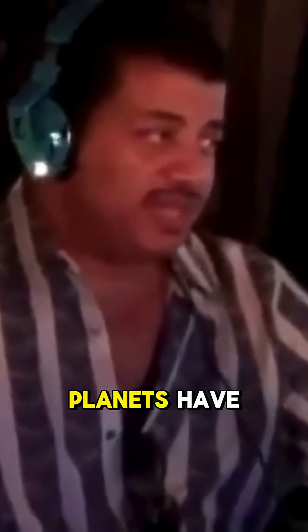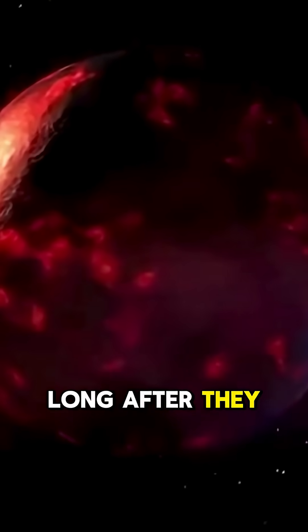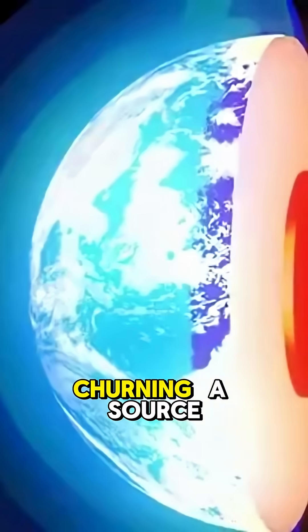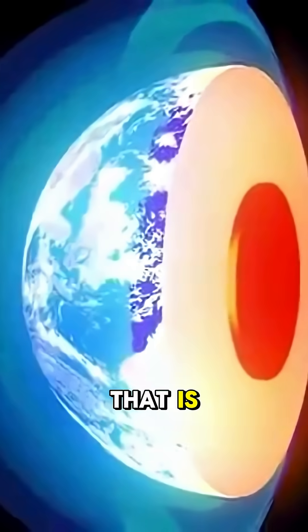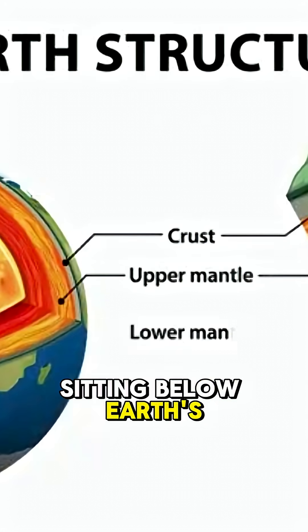We also know that many planets have still retained their heat of formation long after they've come into existence. Earth still has heat churning, a source of energy that is not traceable to the sun. This is what creates the magma that's sitting below Earth's crust.